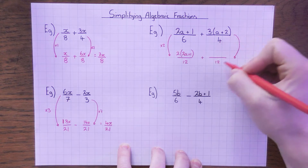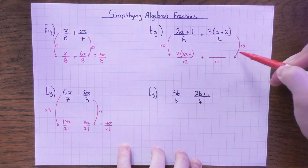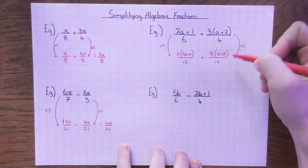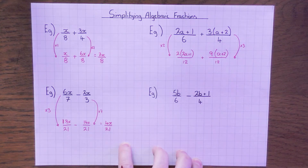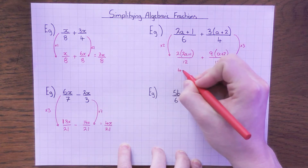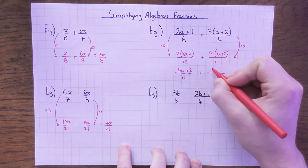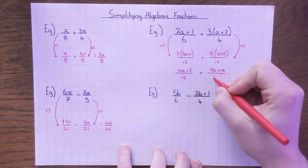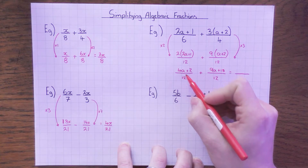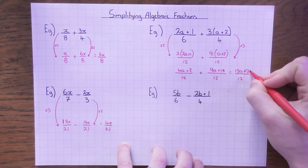What do I do to 4 to get to 12? I times it by 3. This one is already in brackets, so I just times the outside by 3: 3 times 3 is 9, so there's a 9 on the outside of the bracket. Next, expand these brackets. 2 times 2a is 4a, and 2 times 1 is 2, denominator still 12. Then 9 times a is 9a, and 9 times 2 is 18, denominator still 12. Denominators are the same, so we add the numerators: 4a plus 9a is 13a, and 2 plus 18 is 20. So the answer is (13a + 20) over 12.